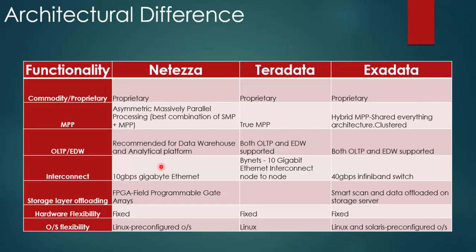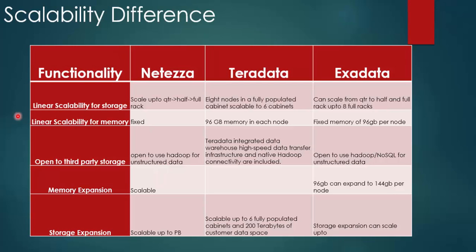Let's move on and look at some scaling solutions. Scaling-wise, there are two categories: horizontal scaling and vertical scaling. Horizontal scaling, also referred to as linear scaling, means you can add more racks if required. Vertical scaling involves expanding storage and memory. Netezza is very expandable and supports vertical scaling, as does Exadata. However, vertical scaling has its own limitations — you cannot scale beyond a certain point. That covers MPP solutions within data warehouse appliances.